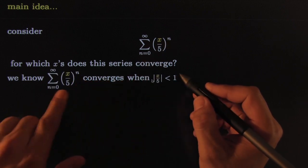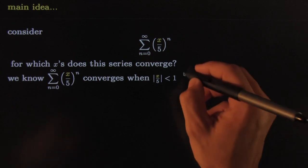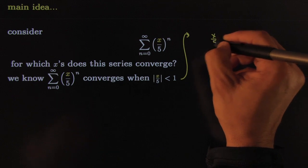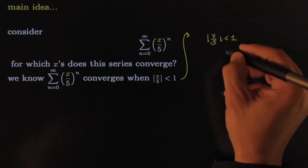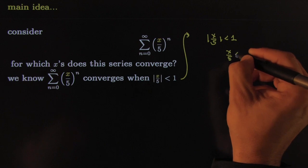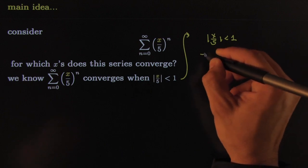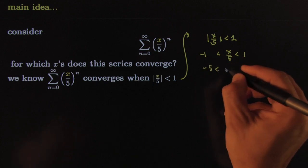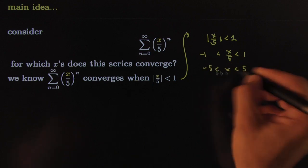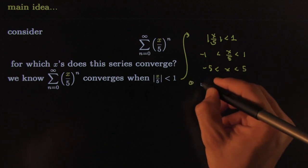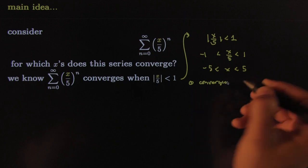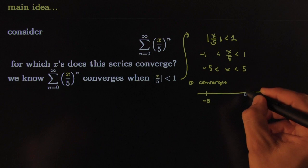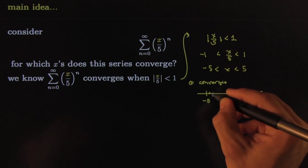So applied to this specific problem, we know that it will converge if x over five is less than one in absolute value. That would mean x over five is less than one and greater than negative one. So by multiplying both sides, I find my x to be within five and negative five. Here's what I know so far: it converges for all these x's—the x's that are within negative five to five.